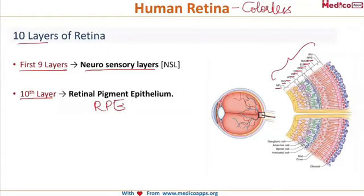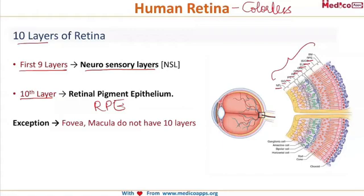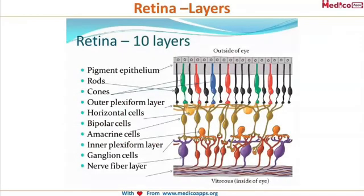There is one exception where there are no ten layers — that is the fovea and the macula. Here the retina is not made up of the ten layers. All the layers explained until now apply to the general retina, with the exception of the fovea and macula.